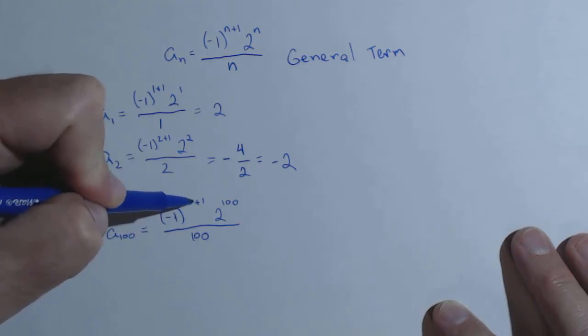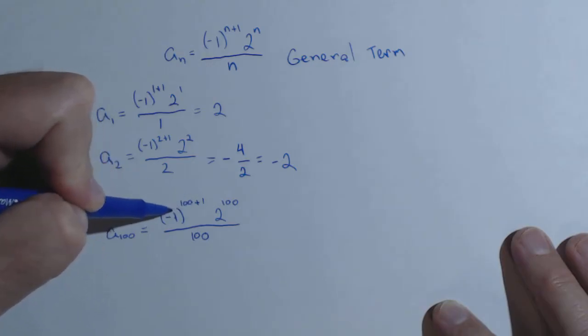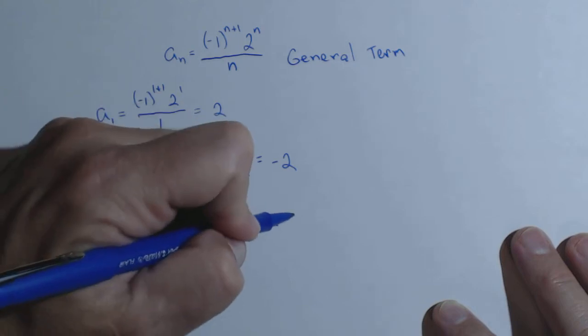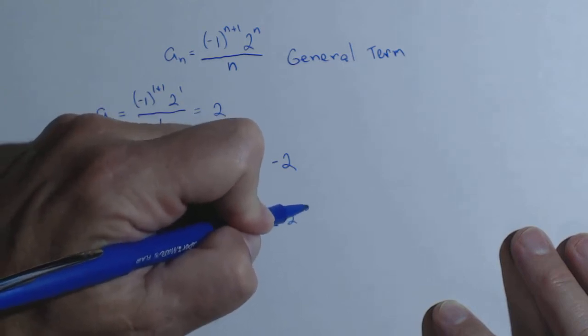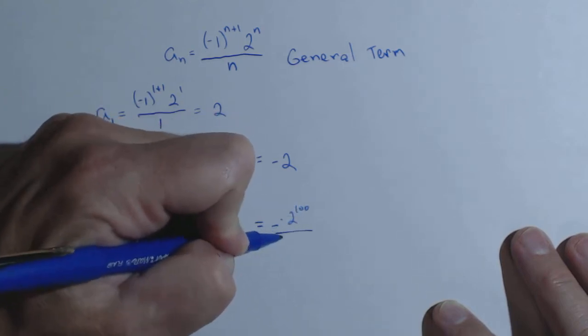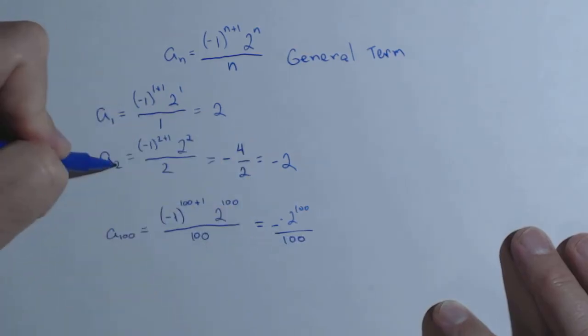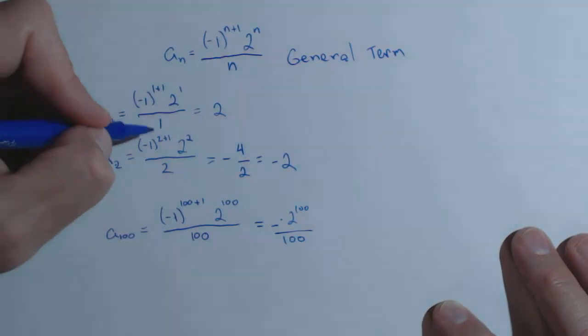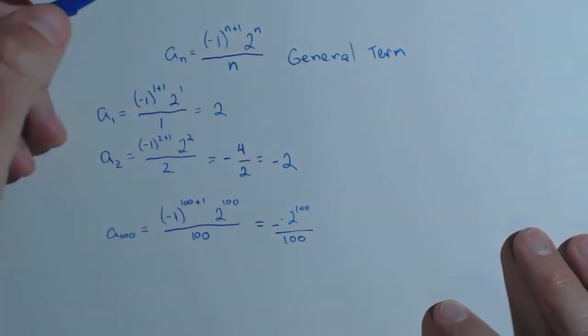Now here we have negative one to the 101. Since it's an odd number, this will be negative. And two to the 100, which is a really large number, we're not going to bother calculating it, over 100. So we can see all the even terms are going to come out negative, all the odd terms are going to come out positive because of this piece right here.